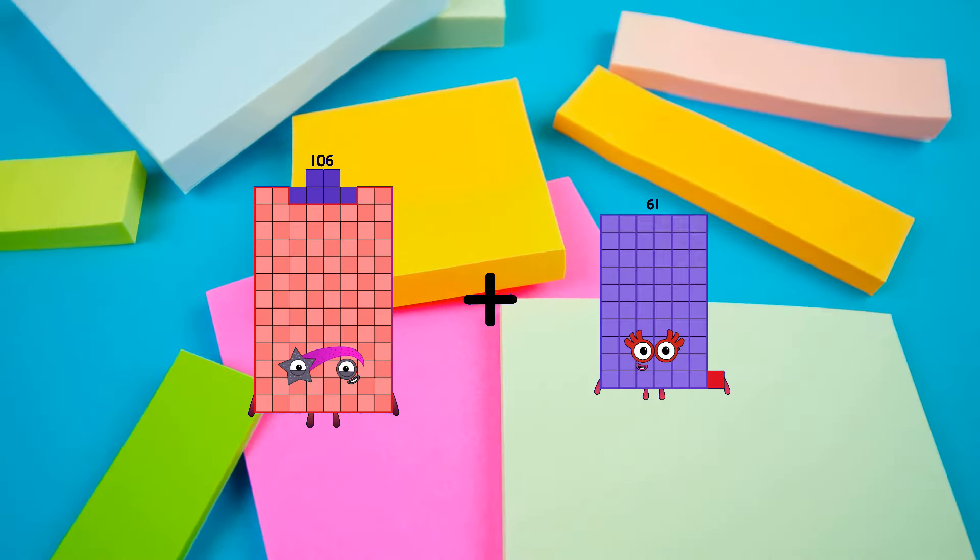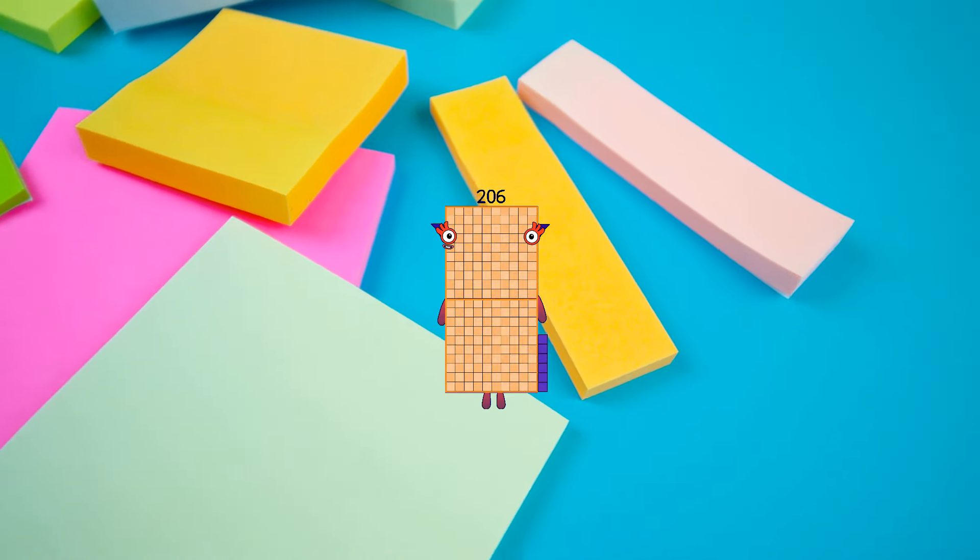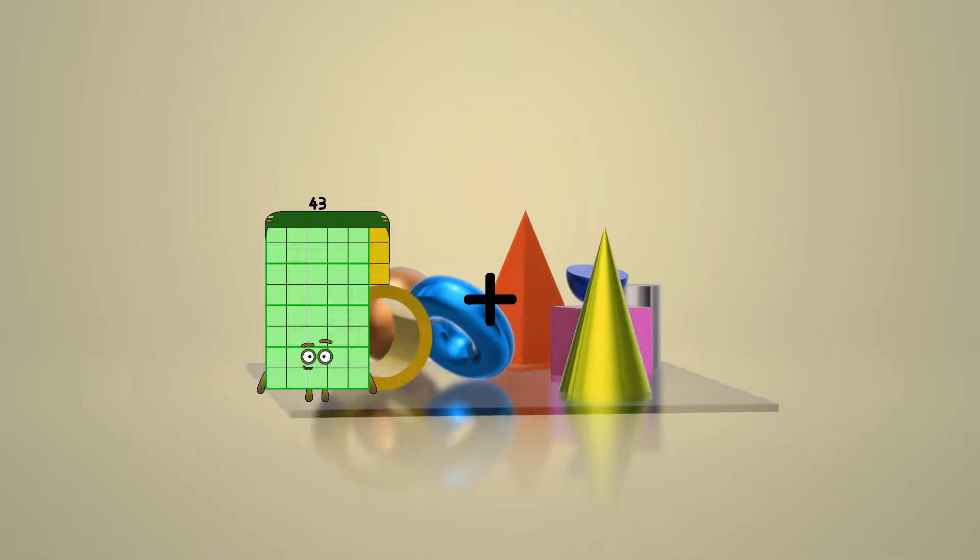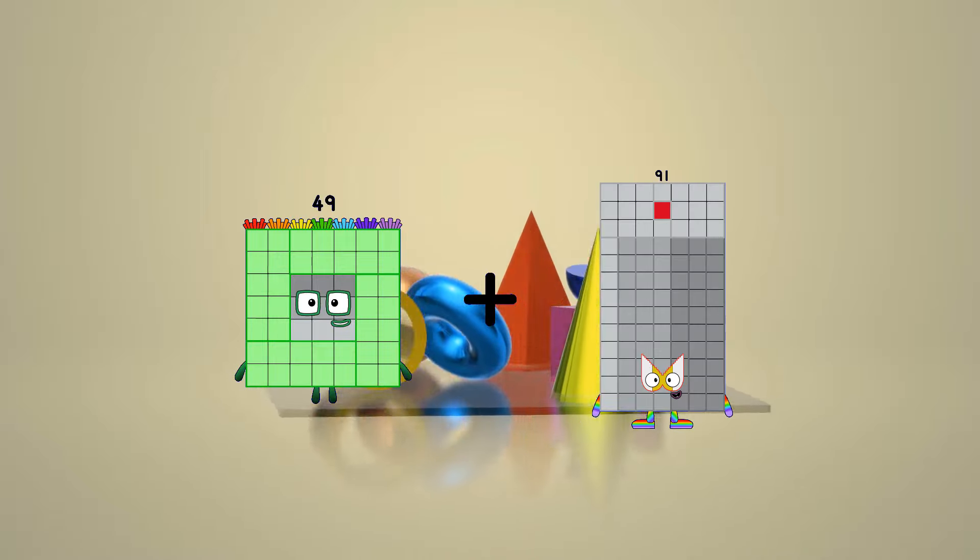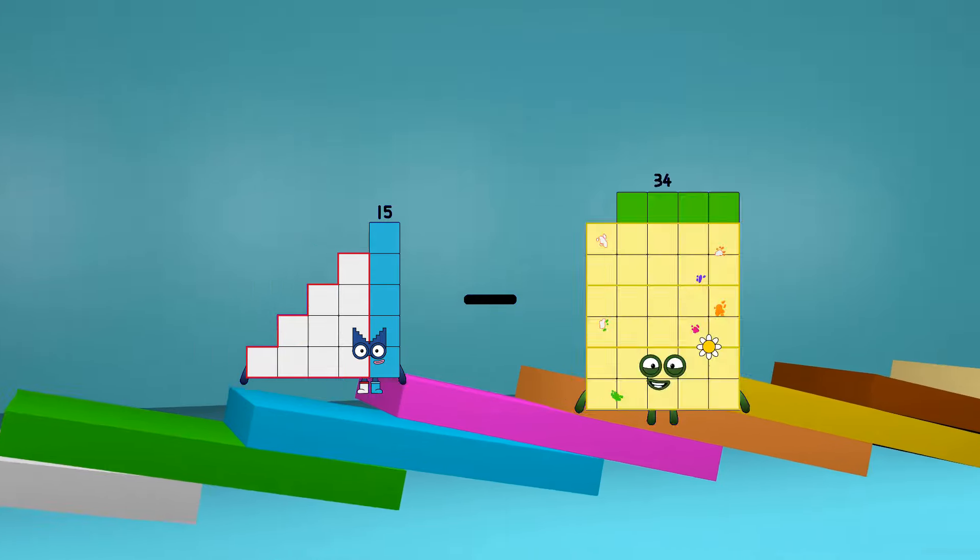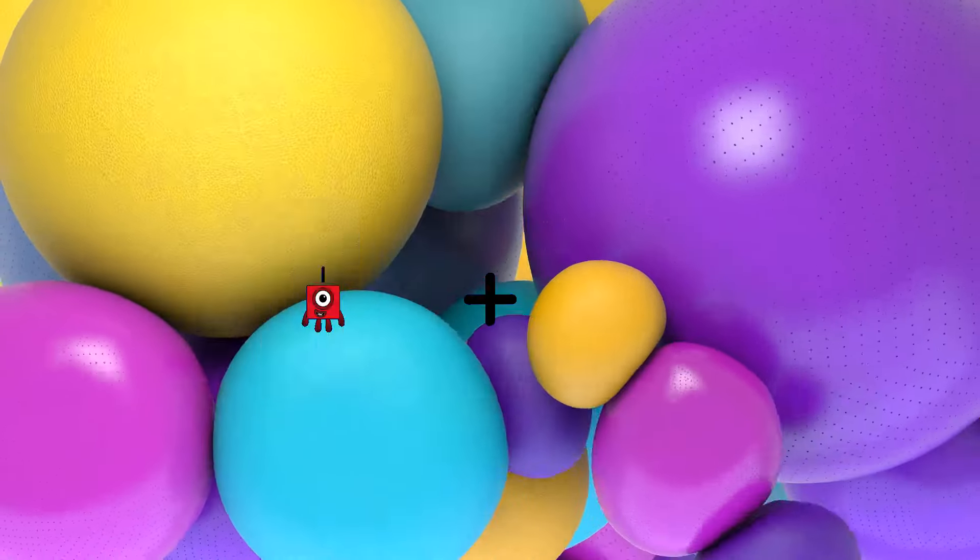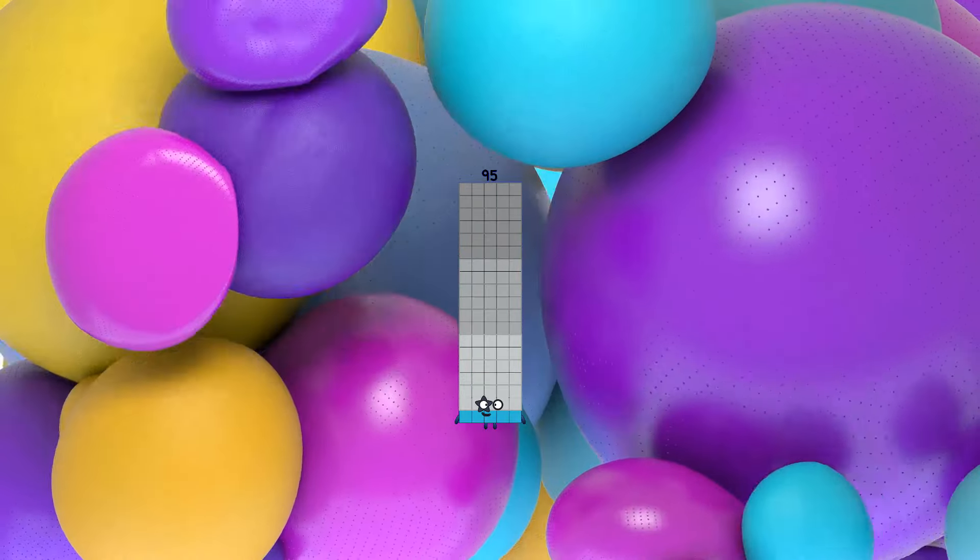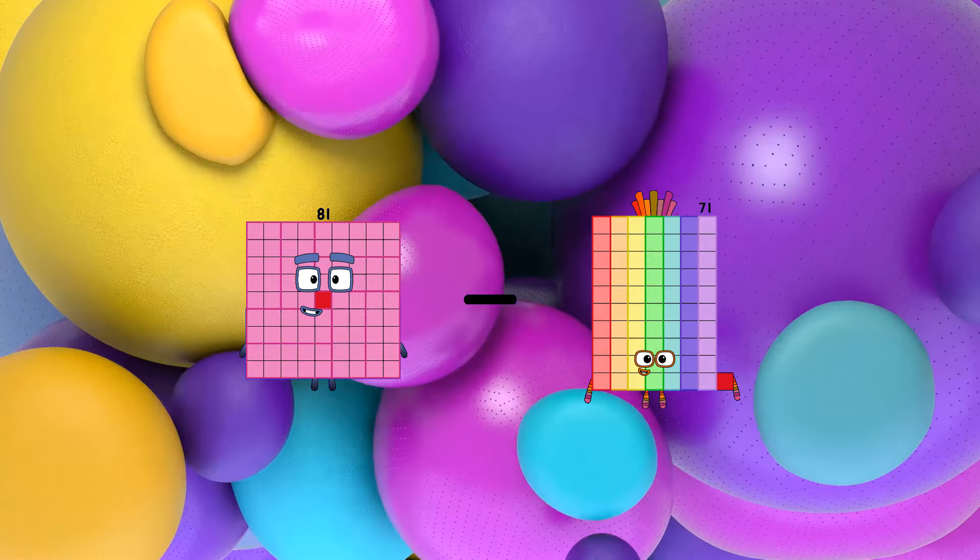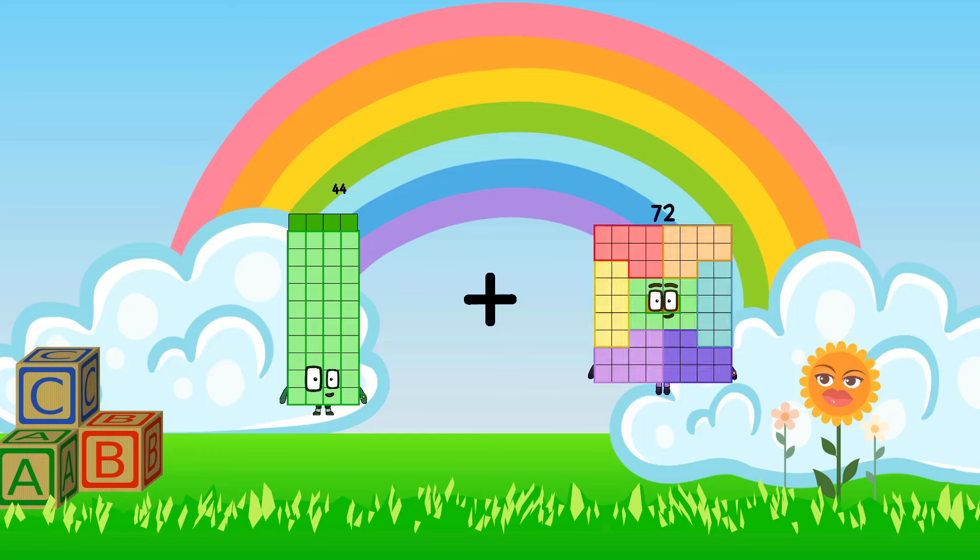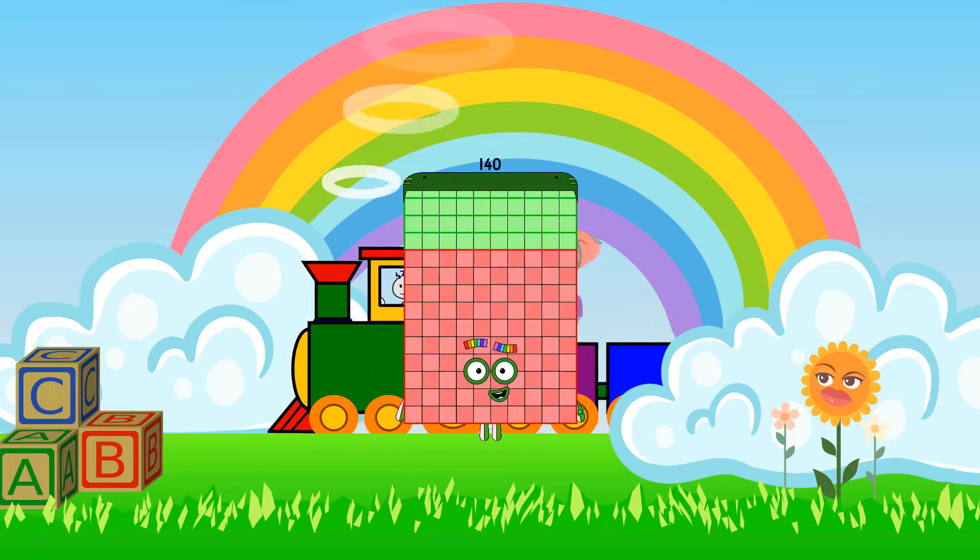106 plus 100 equals 206, 54 minus 47 equals 7, 49 plus 91 equals 140, 15 minus 2 equals 13, 25 plus 70 equals 95, 81 minus 68 equals 13, 44 plus 96 equals 140.